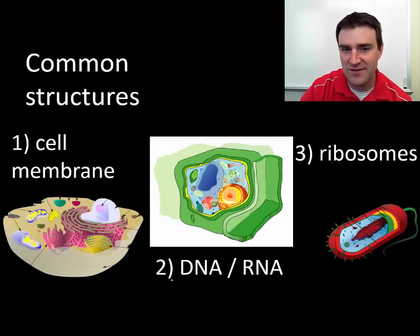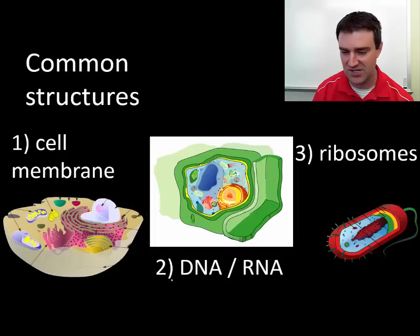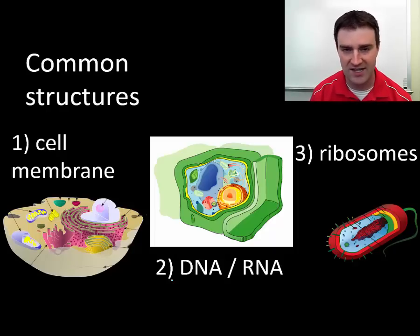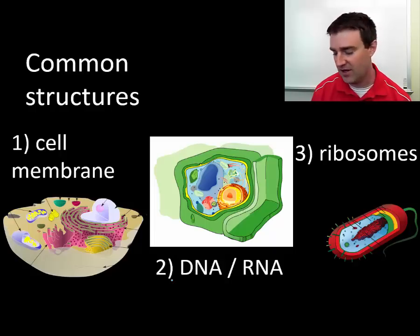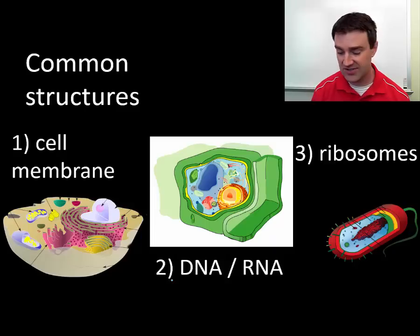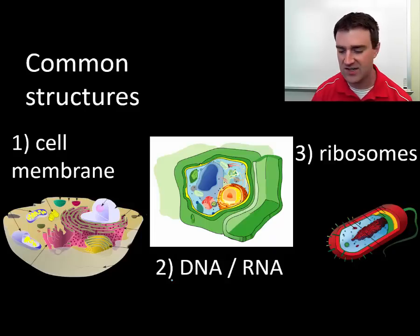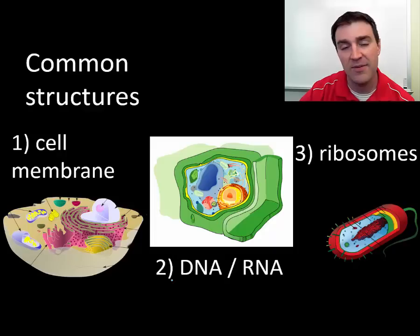In this video I'd like to emphasize the unity of life first. I show a prokaryotic cell on the right and two eukaryotic type cells on the left and center. I want to argue that there are three major structures all of these cells have in common: the cell membrane, DNA and RNA, and ribosomes.